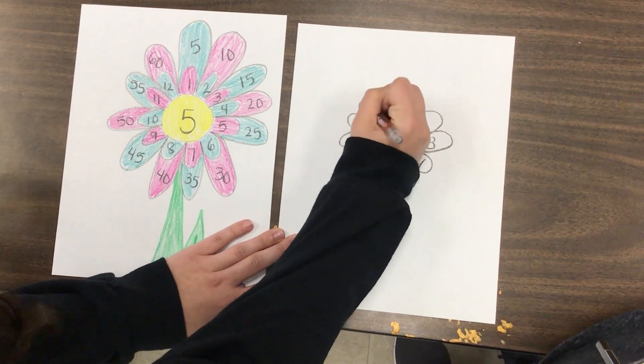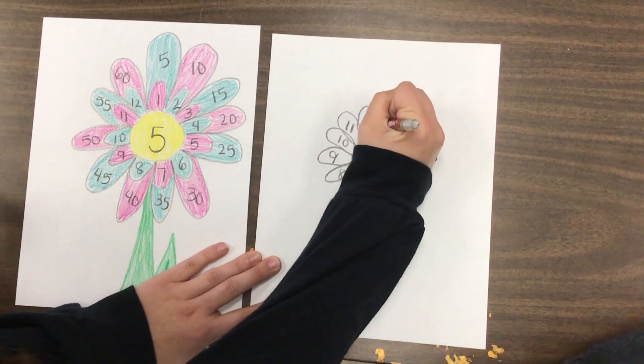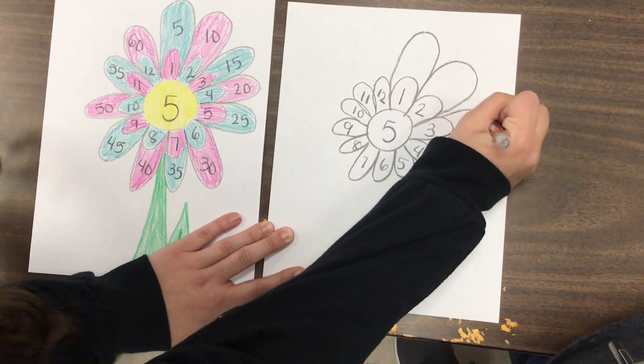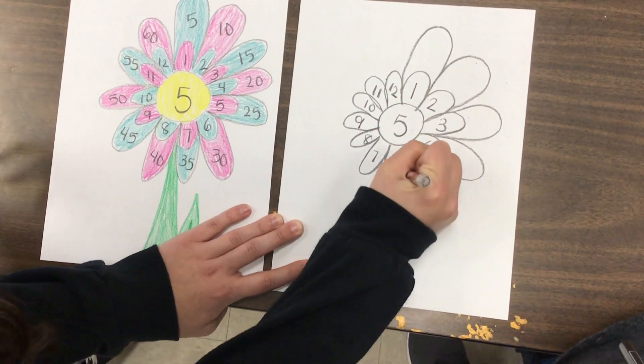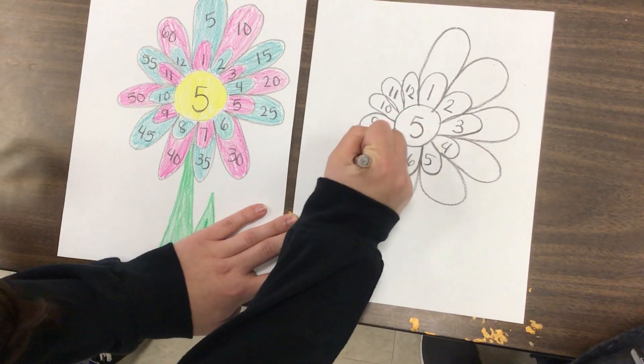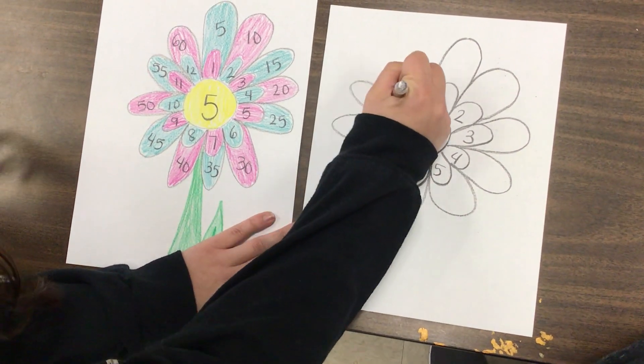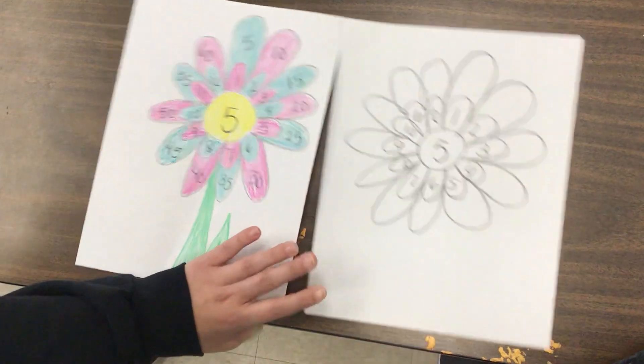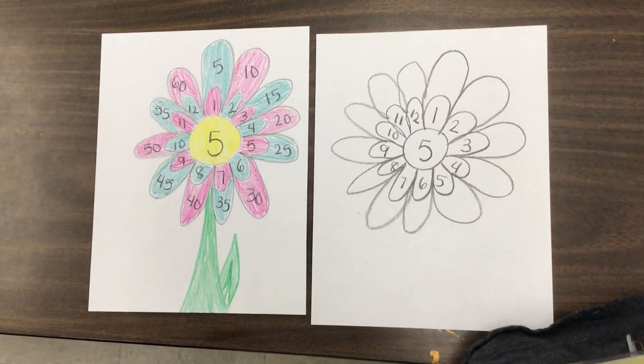After you have filled that in, then you're going to make twelve big petals. Help me count again! One, two, three, four, five, six, seven, eight, nine, ten, eleven, twelve! And it's alright if it's not perfect. We all just try our very best.